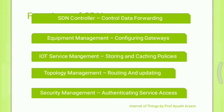These are the functions of the different layers. The SDN controller handles equipment management, IoT service management, topology management, and security management. As a central controller, the SDN controller controls data forwarding and all tasks are decided by the SDN controller. Equipment management covers the configuration of gateways and routers. IoT service management includes storing and caching.